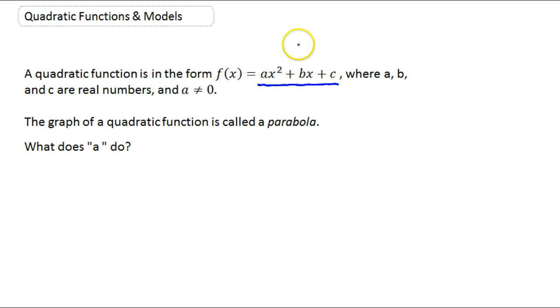Basically you're always looking for that squared term. As long as your highest degree term is a two, then you've got a quadratic function. The graph of a quadratic function is called a parabola.